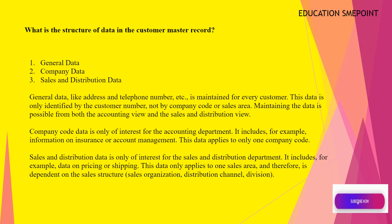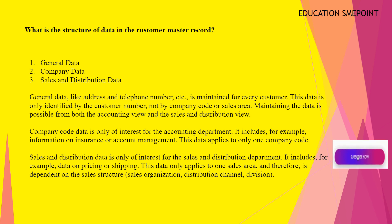What is the structure of data in the customer master record? General data, company data, and sales and distribution data. General data, like address and telephone number, is maintained for every customer. This data is only identified by the customer number, not by company code or sales area.